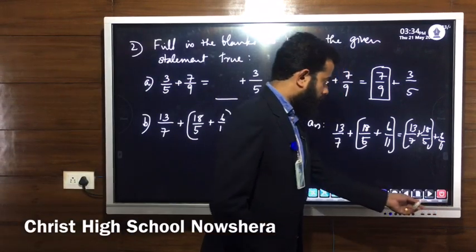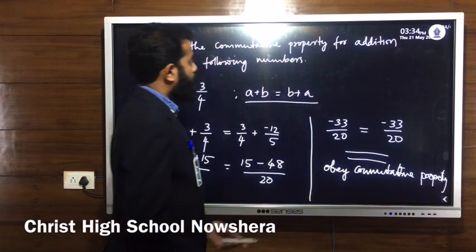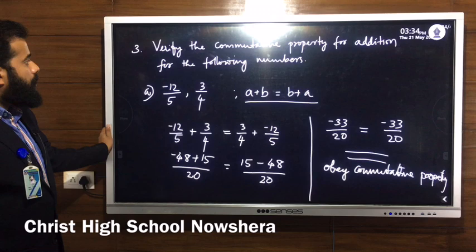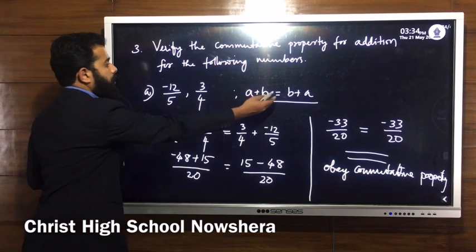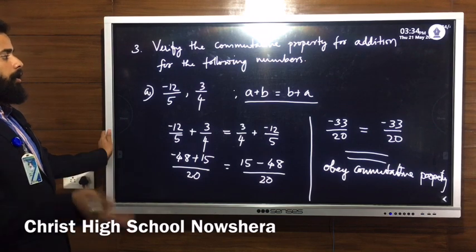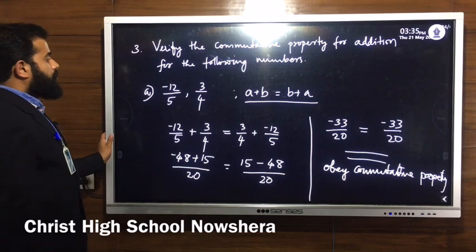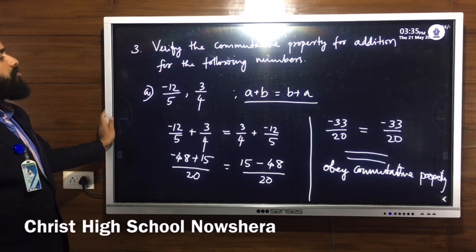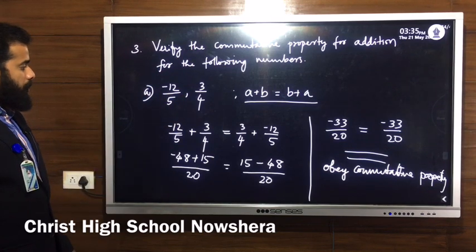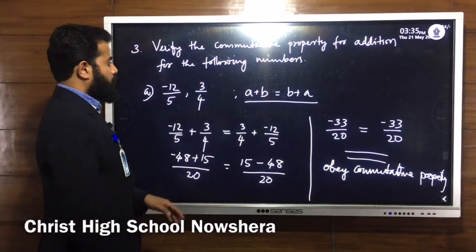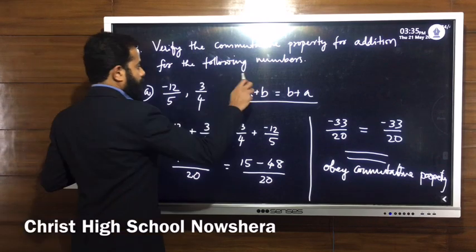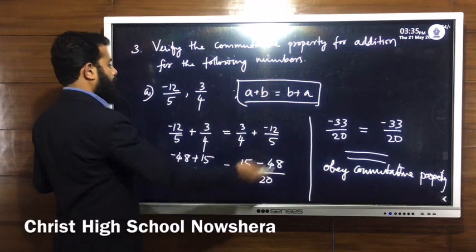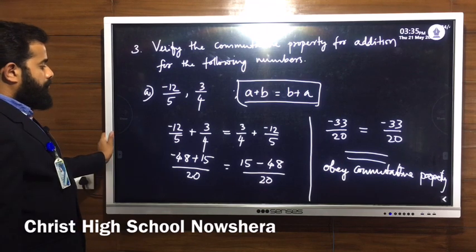If there are more parts, you can try by yourself. Now we move to the next question: verify the commutative property for addition for the following numbers. We have to check A plus B equals B plus A. First: minus 12 divided by 5 and 3 by 4. We have to verify the commutative property of addition between these two rational numbers.